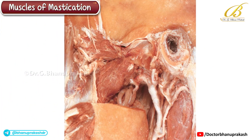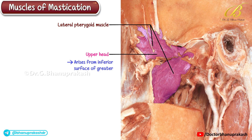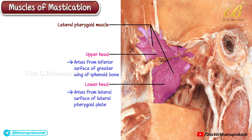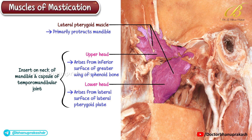This image shows the lateral pterygoid muscle. It has two heads. The upper head arises from the inferior surface of the greater wing of the sphenoid bone. The lower head arises from the lateral surface of the lateral pterygoid plate. Both heads converge to insert on the neck of the mandible and the capsule of the temporomandibular joint. The lateral pterygoid primarily protracts the mandible and helps open the mouth by pulling the mandibular head forward.